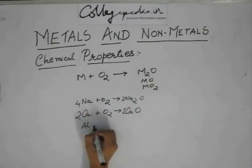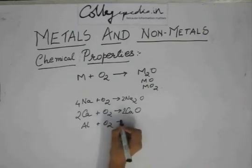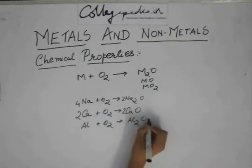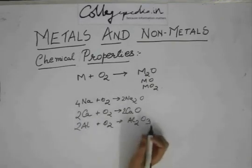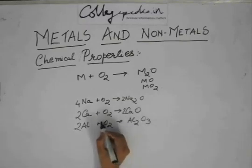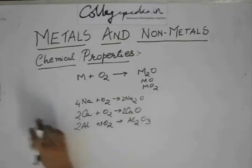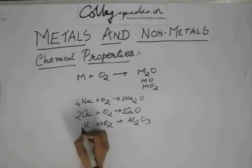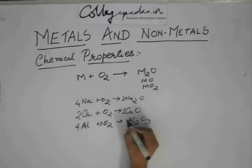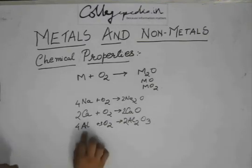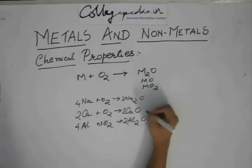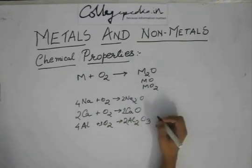You can have aluminum plus oxygen giving Al2O3. This is 4Al plus 3O2 gives 2Al2O3. This is sodium oxide, this is calcium oxide, and this is aluminum oxide.